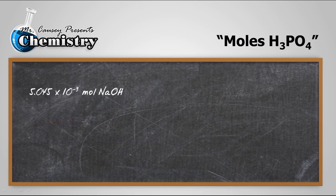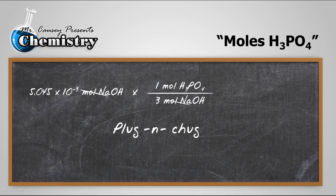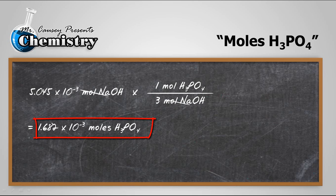Now let's do moles phosphoric acid. We know there are 5.045 times 10 to the negative 3 moles of sodium hydroxide. We also know that there's a 3 to 1 relationship of sodium hydroxide to phosphoric acid. So what we'll do is we'll use that to convert. And note that I've put it in such a way our moles of sodium hydroxide cancel out. We can now take that and plug and chug it. And voila.